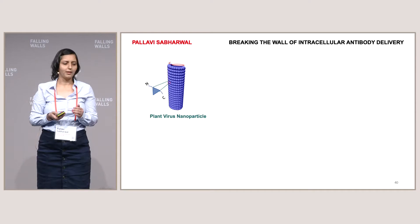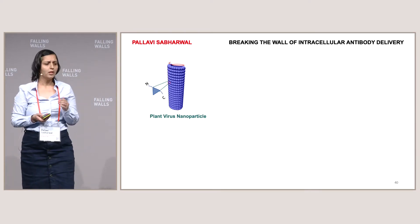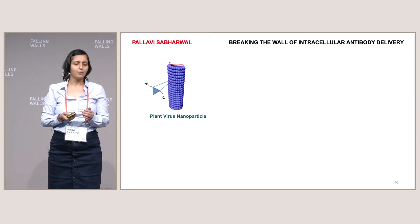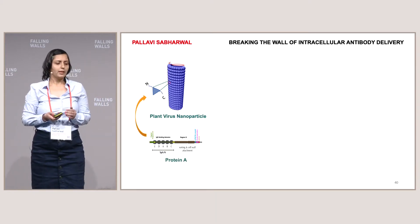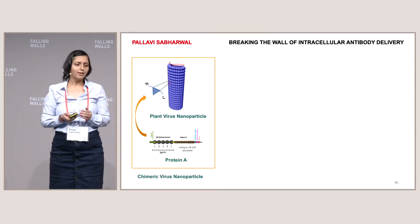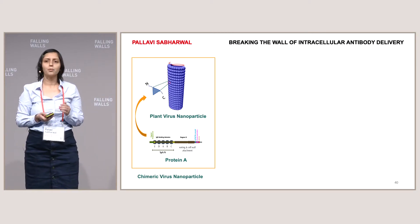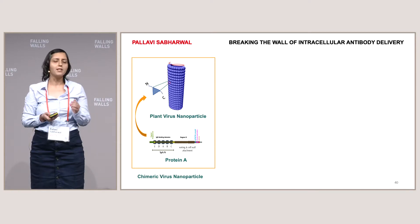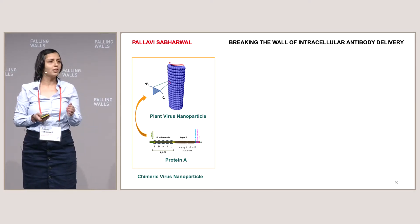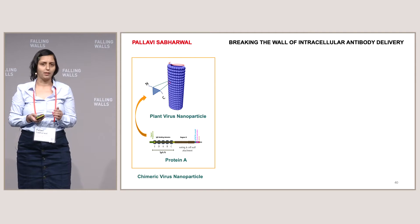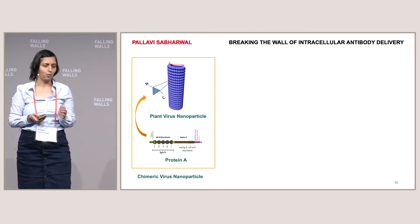We chose a plant virus nanoparticle which is a flexuous rod. This plant virus infects pepper plants in India. The beauty of this nanoparticle is that there are 2,000 protein subunits which form these long rods — we can imagine the payload capacity. Since it is a proteinaceous nanoparticle, it can be modified in various forms.